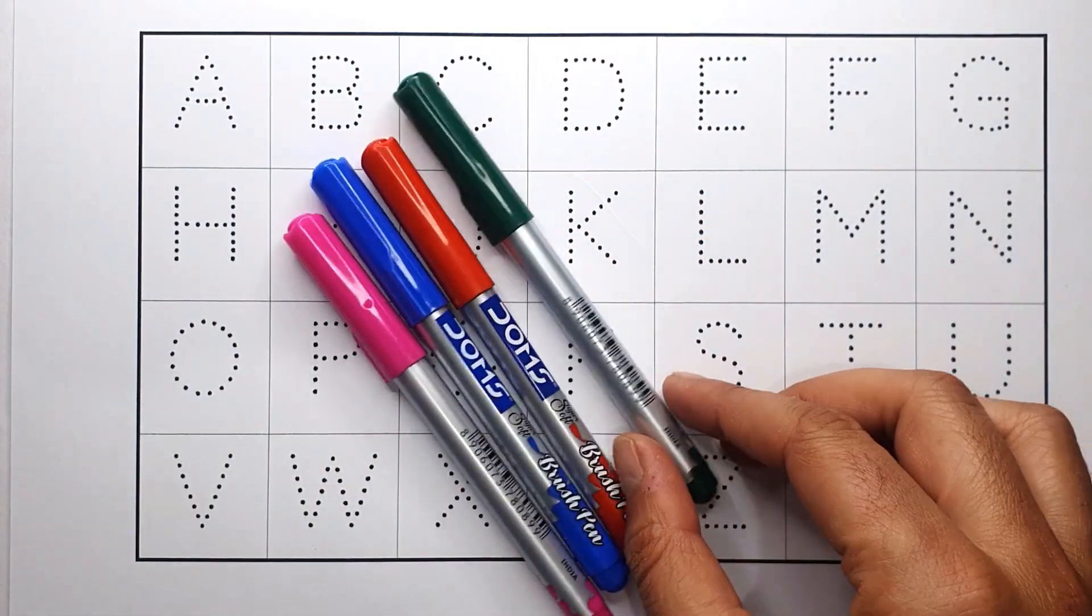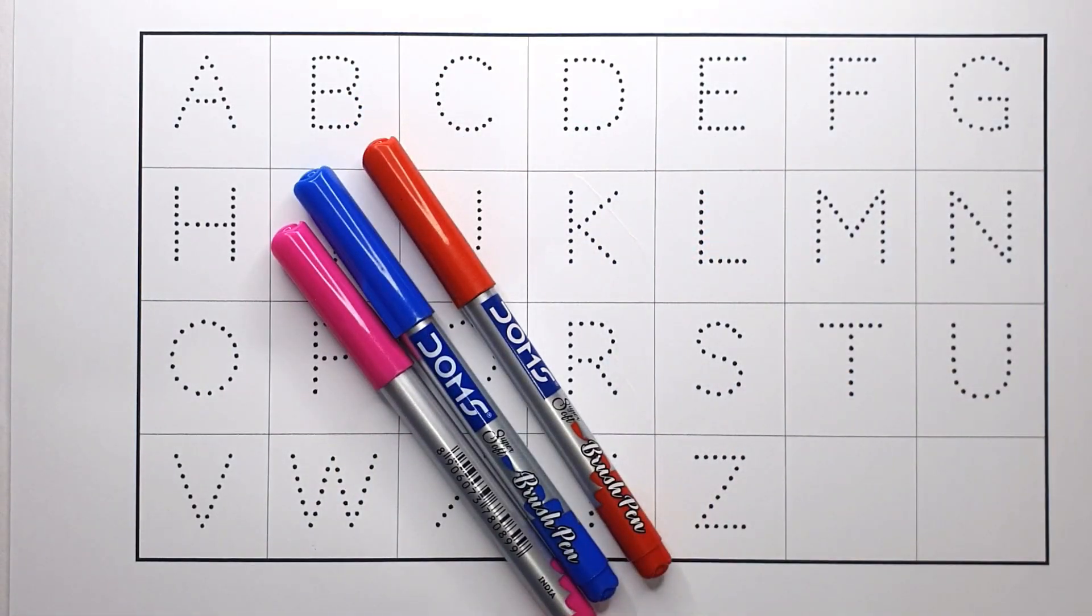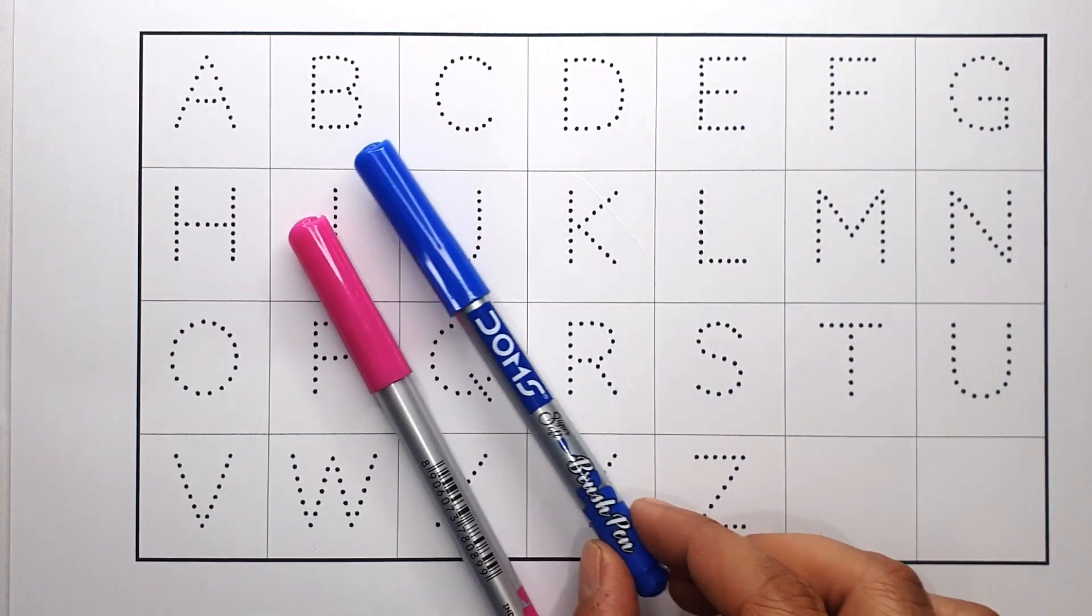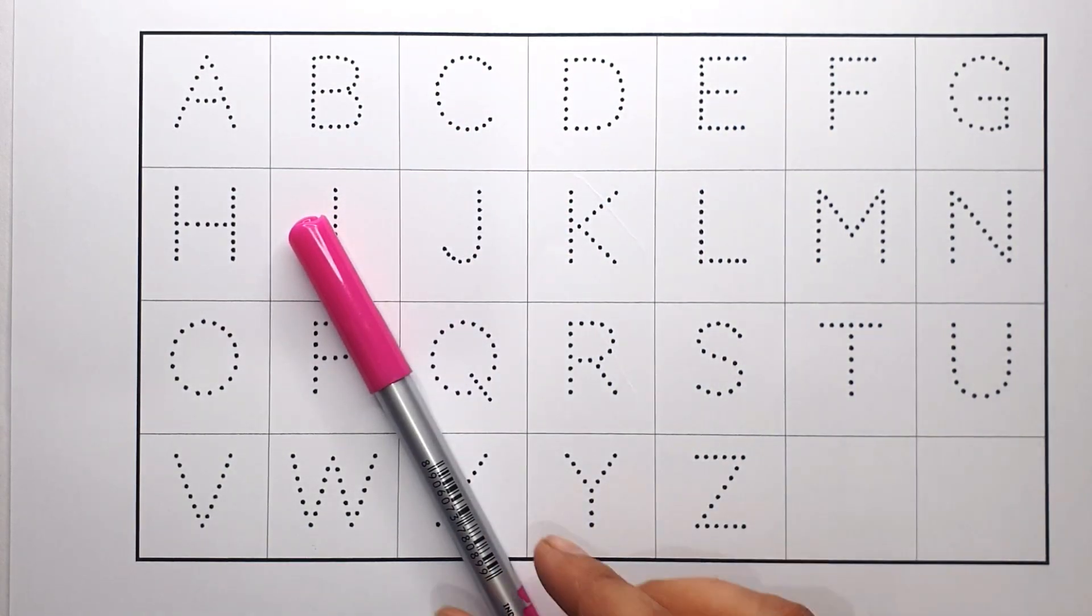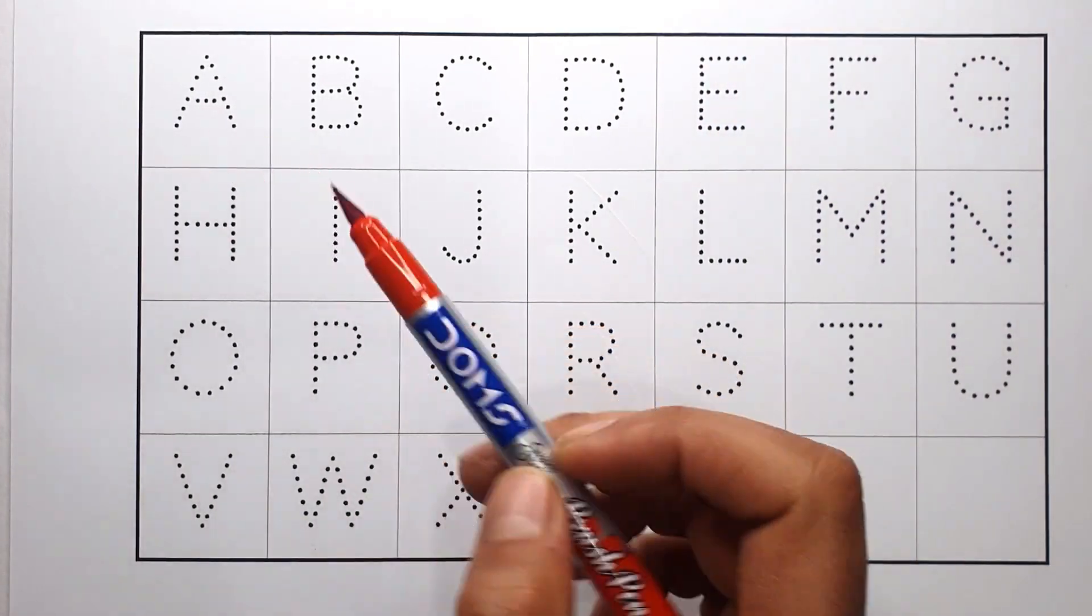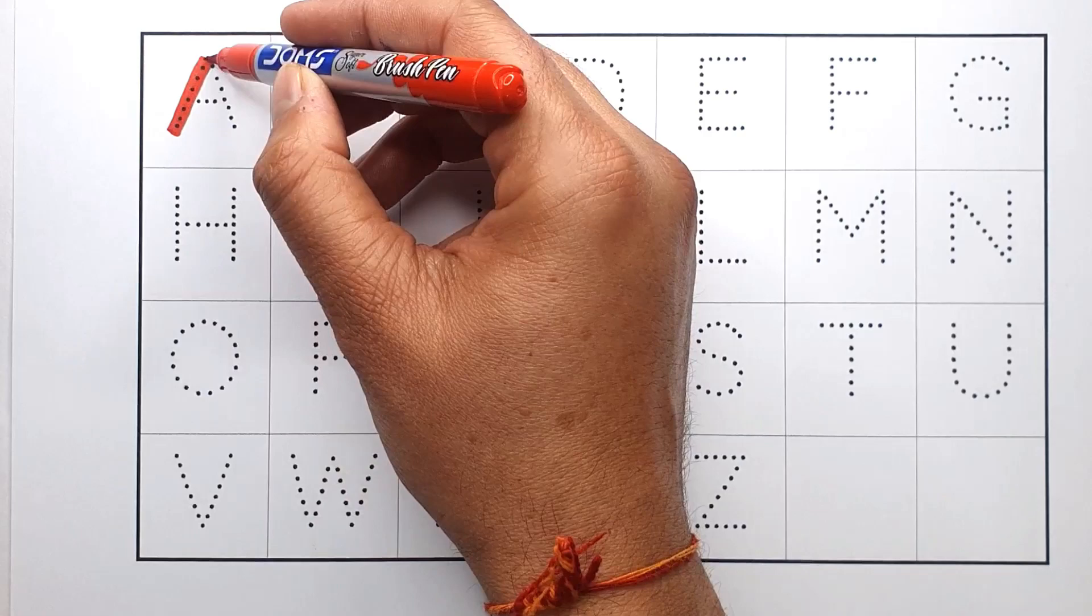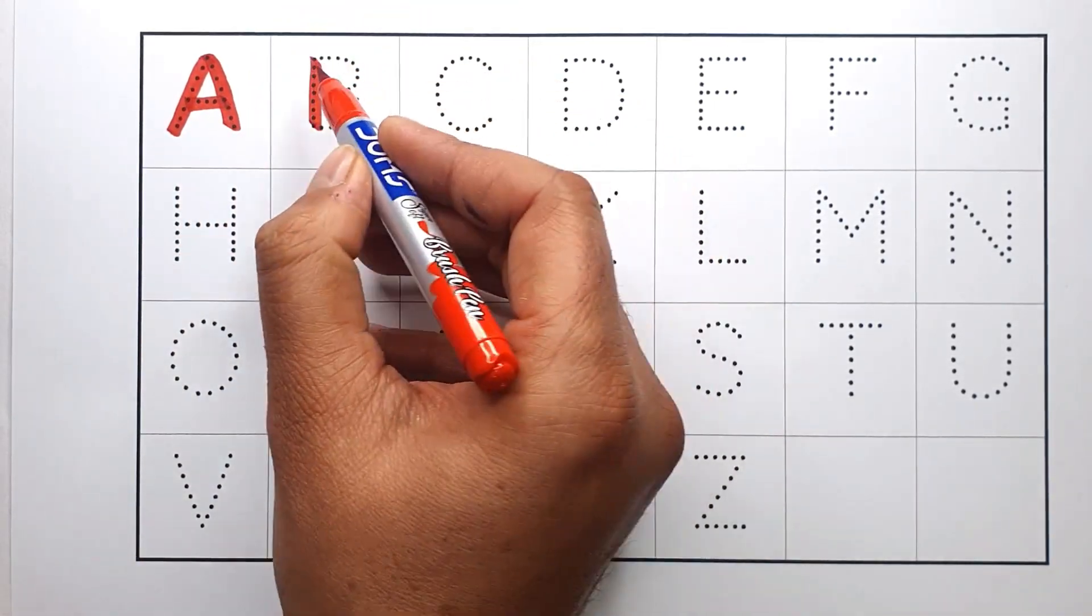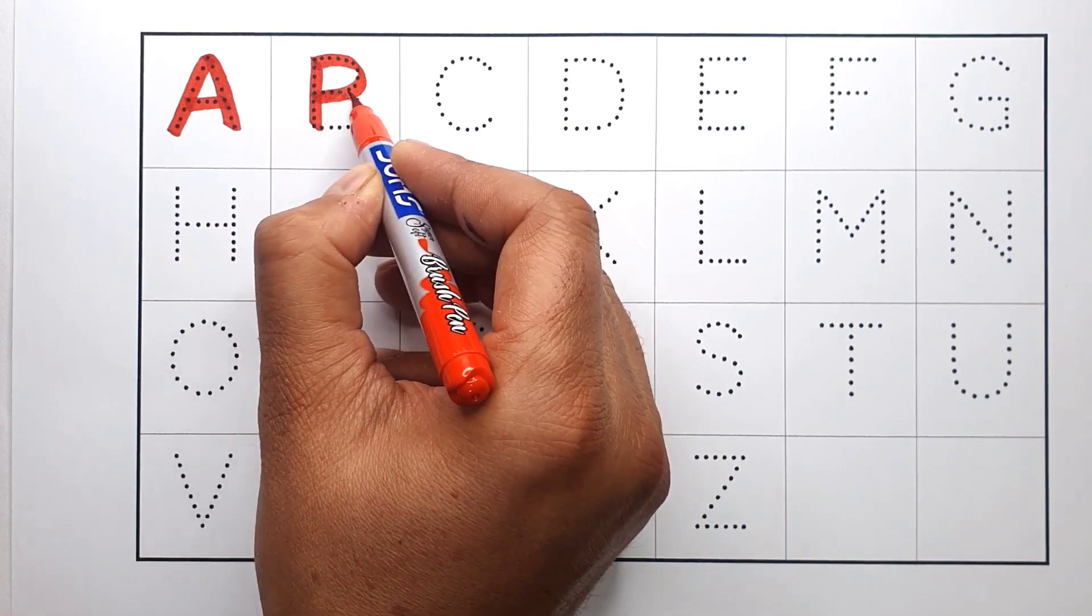Let's learn colors. Name green color, red color, blue color, pink color, red color. A, A for apple. B, B for ball.